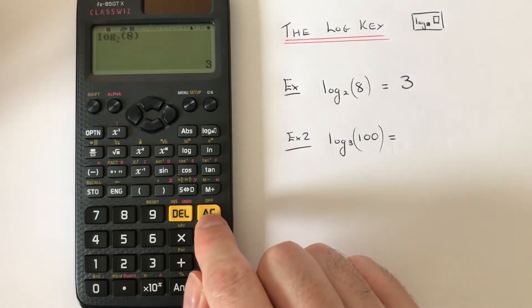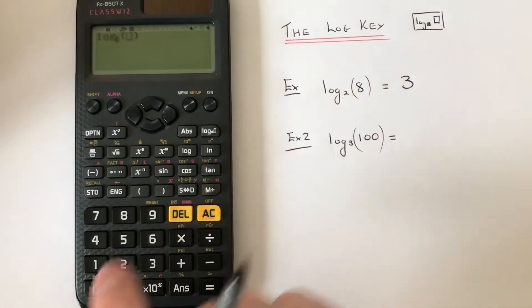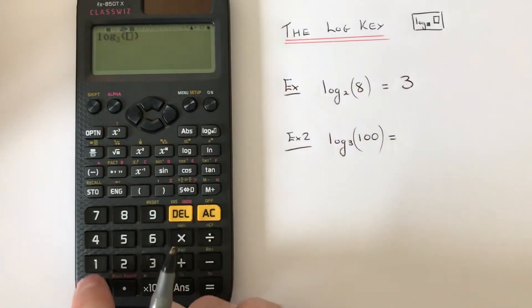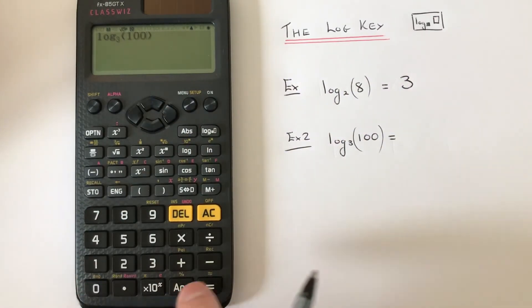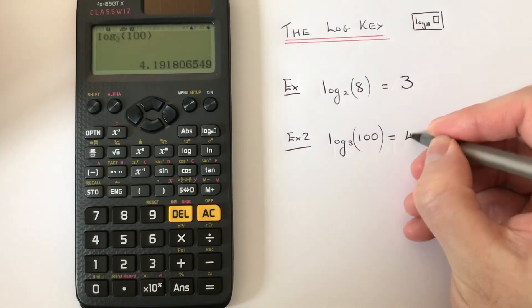We've got to work out log base 3 of 100. So again, if you press the log key, press 3, type in 100, and press equals, we get 4.19 to two decimal places.